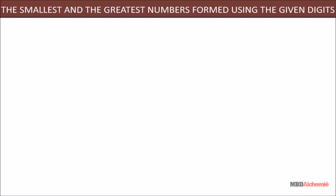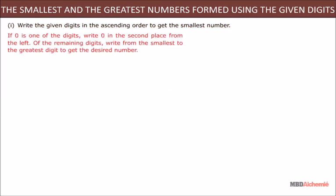The smallest and the greatest numbers formed using the given digits. Write the given digits in the ascending order to get the smallest number. If 0 is one of the digits, write 0 in the second place from the left. Of the remaining digits, write from the smallest to the greatest digit to get the desired number.